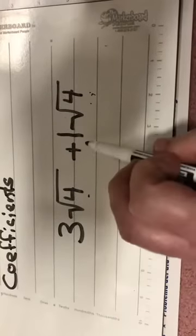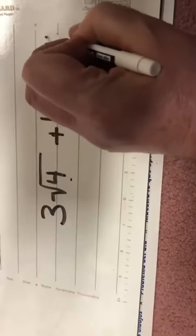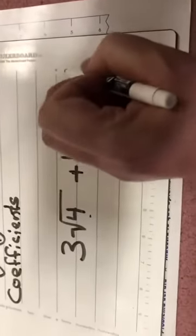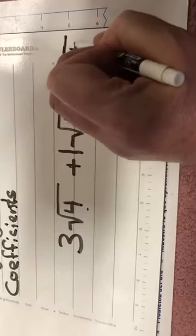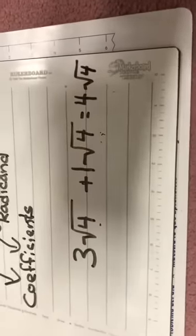So really what you're adding is three plus one. Three plus one is four, and then I just make my square root of four part of my answer.